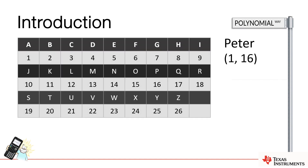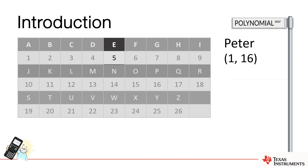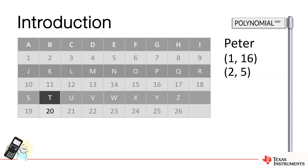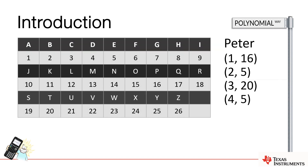Our next letter is E. E is the fifth letter of the alphabet, so point 2 becomes 2 comma 5 — 2 because E is the second letter in my name, and 5 because E is the fifth letter of the alphabet. T is the next letter, which is the twentieth letter in the alphabet, so the next point is 3 comma 20. The second E gives us 4 comma 5, and finally R, which is the eighteenth letter of the alphabet, gives us 5 comma 18.